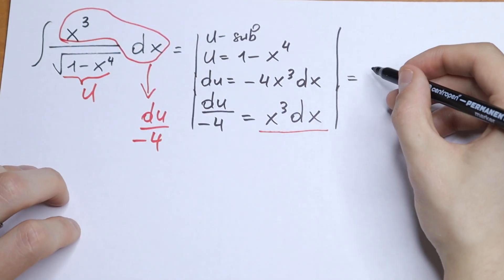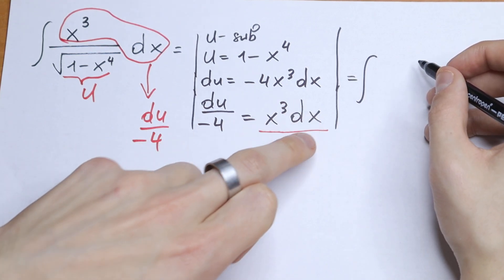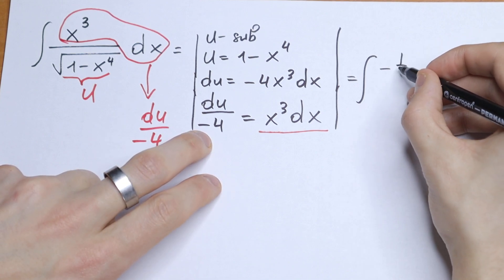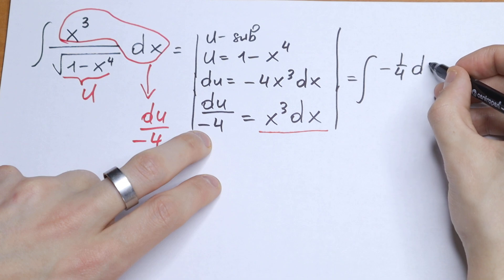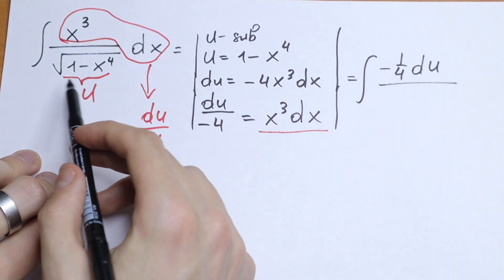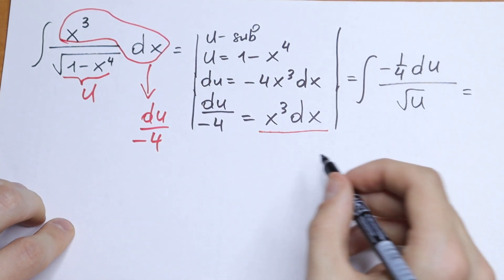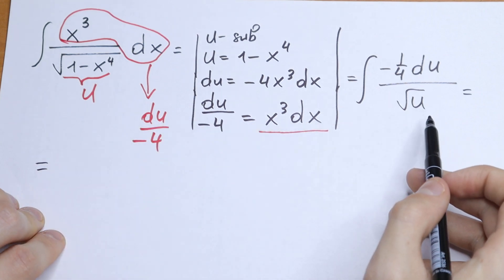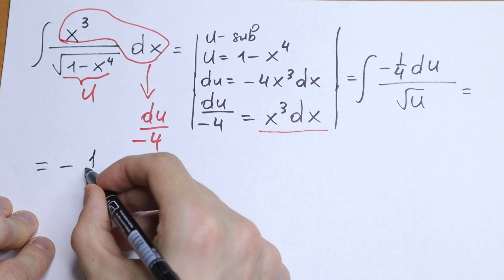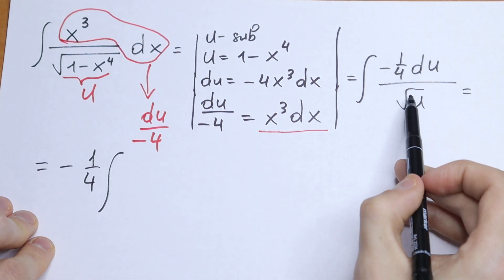As a result we will have an interesting integral. We factor out the constant minus 1 over 4, and inside the integral we have only 1 over the square root of u — which we write as u to the power minus 1 half du.